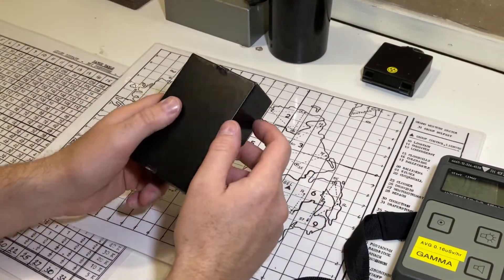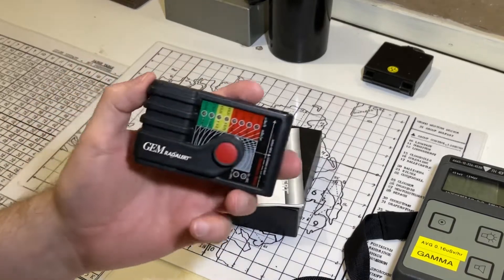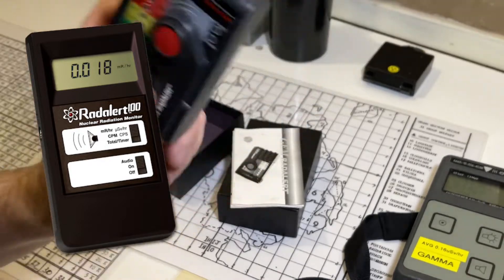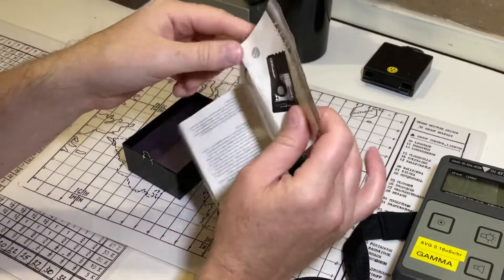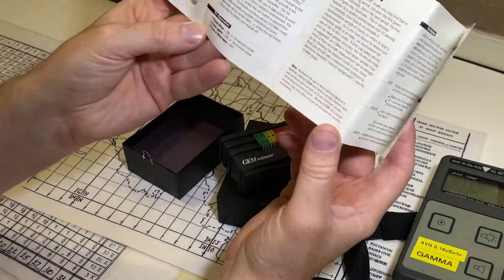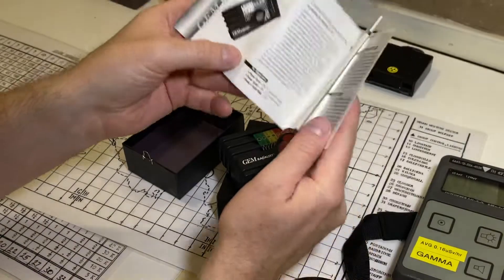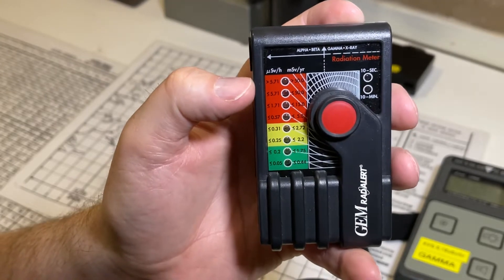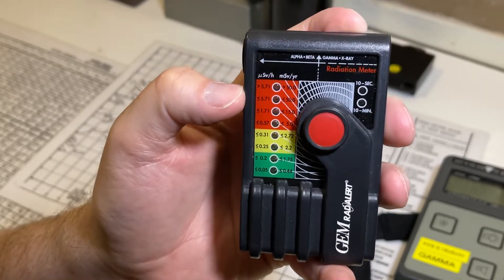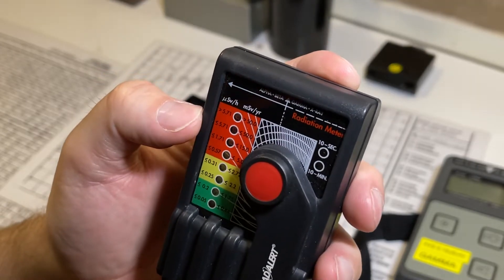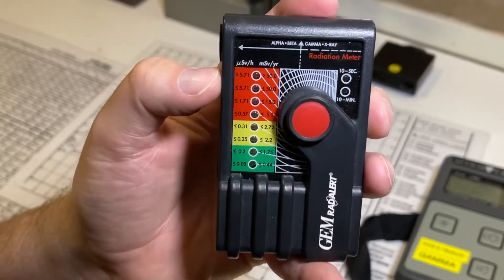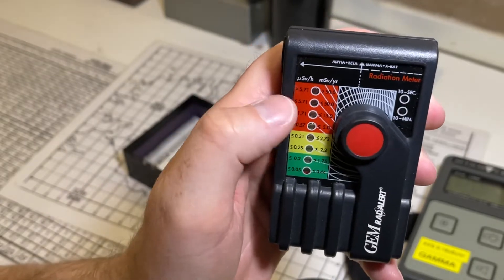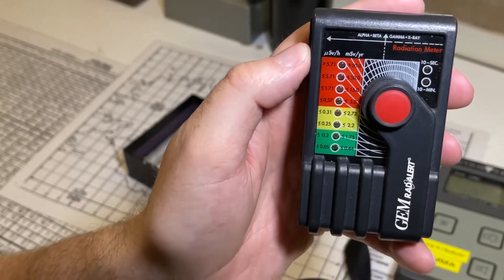This little interesting device is called the Gem Rad Alert. There is another product on the market called the Rad Alert and Nuke Alert, but this is not made by that company. This is made by a company in England, in the UK, called Perspective Scientific. As you can see it is quite low range, it will only go up to 5.71 microsieverts, and then it'll also convert that into a yearly dose in millisieverts, which is quite interesting.